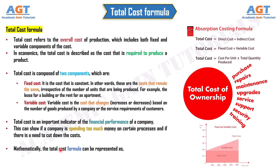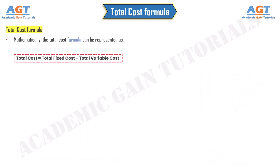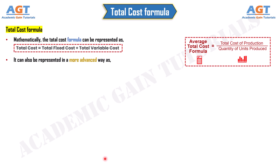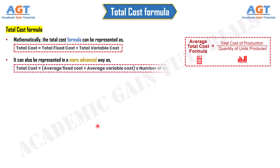Mathematically, the total cost formula can be represented as: Total cost = Total fixed cost + Total variable cost. It can also be represented in a more advanced way as: Total cost = (Average fixed cost + Average variable cost) × Number of units.